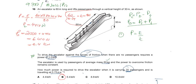To drive the escalator against the force of friction when there are no passengers requires a power of 2 kilowatts. So 2 kilowatts is the power needed to work against the friction, even when there are no passengers.